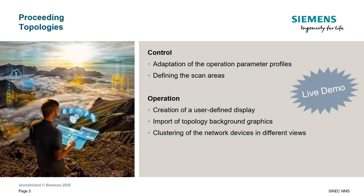For topologies to work, we'll make adjustments at the following places. In the CNEC NMS control — that is, in our higher-level instance — we'll first adjust the parameter profiles with which we will fill our CNEC NMS operation afterwards. There we'll also define the scan areas that our operation is to scan later on. In the CNEC NMS operation itself, we'll look at how you can create a user-defined depiction or how you can import a topology background graphic.